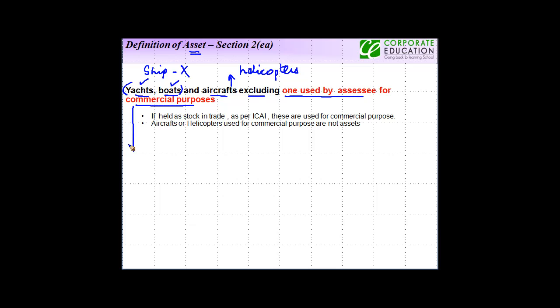Now how do you know whether an asset is used for commercial purposes or not? This can be ascertained from the license granted by relevant authority. So let's say for an aircraft it will be Ministry of Civil Aviation. So you check the license given by the Ministry of Civil Aviation and you will know whether the aircraft is meant for commercial purposes or not.